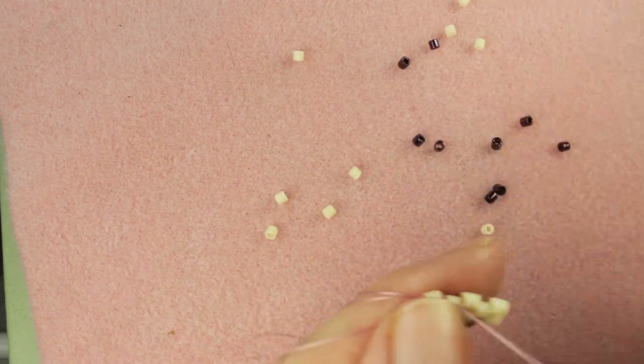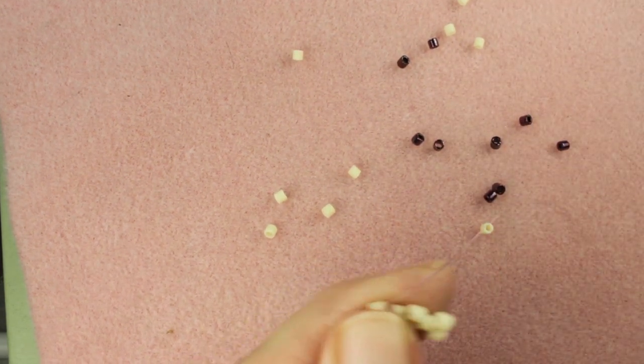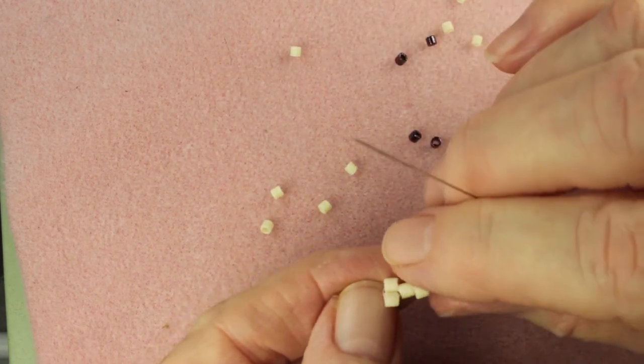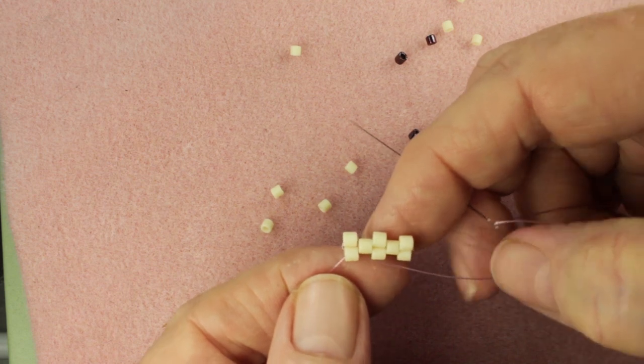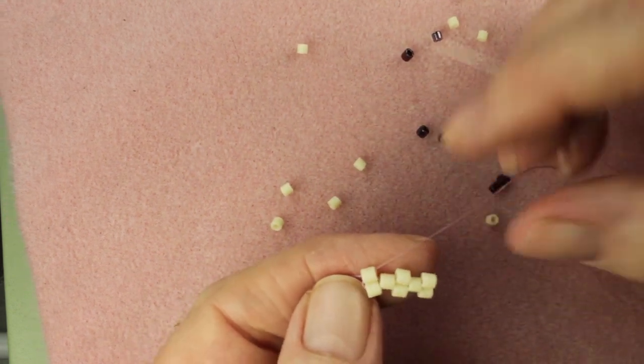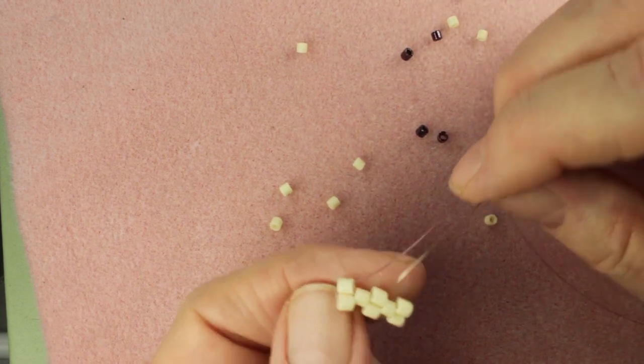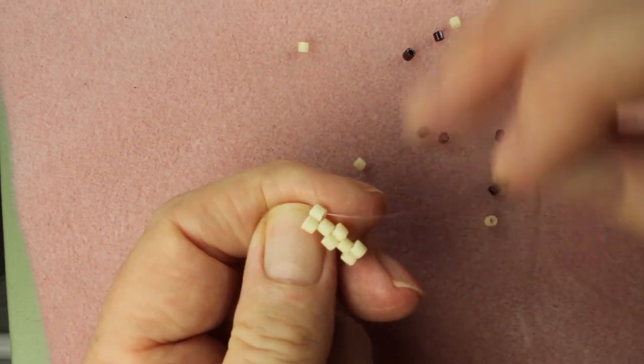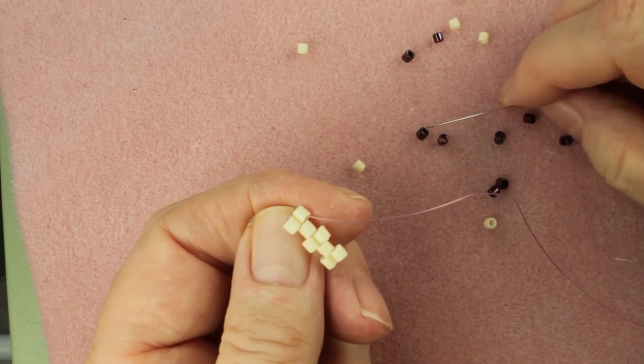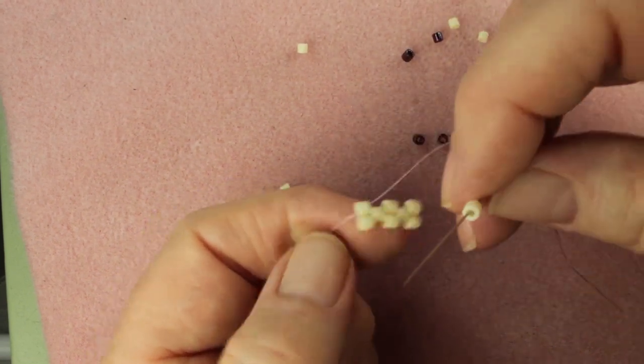Now you just flip your work around, and now you start as I showed you at the beginning of the video. Another way to do an odd count turn around that sometimes people like to do: let's go real quick, do our two beads on this row.